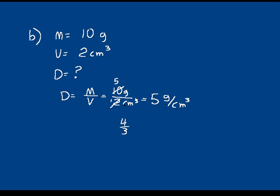Anytime you're dealing with a problem with numbers and units, work the number part separate from the unit part. On this problem, we did 10 over 2, simplified to 5, then separately looked at our units — grams per cubic centimeter — and wrote those down.